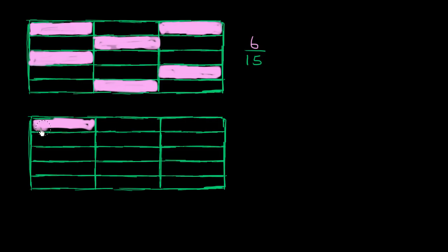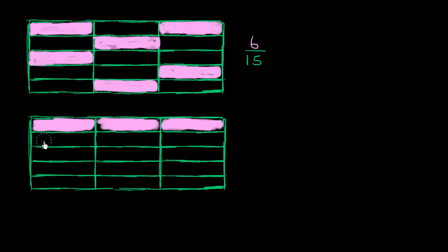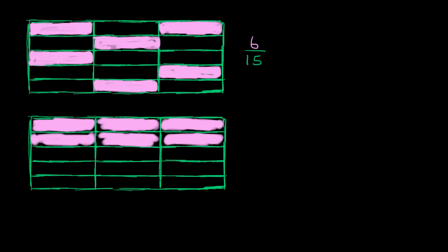I'll make my thing even bigger. 1 rectangle, 2 rectangles, 3 rectangles — halfway there — 4 rectangles, 5 rectangles shaded in, and now 6 rectangles shaded in. So this right over here is still 6 rectangles out of 15 rectangles shaded in. This is still 6 fifteenths. These are representing the same thing.